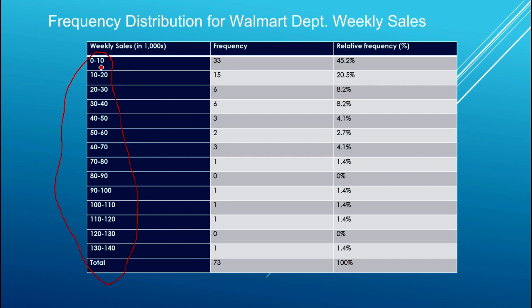Here I've chosen 14 different classes. What's important is that you have enough classes so they're populated and represent the distribution of the data well, but having too many classes is also suboptimal. Finding the right number of classes can often be a matter of trial and error. Here the bins go in increments of $10,000.